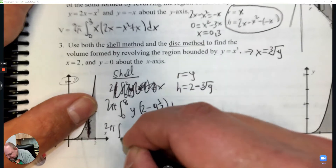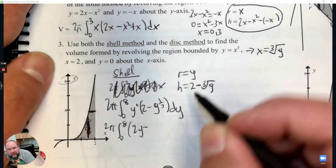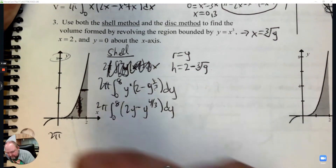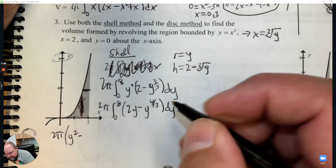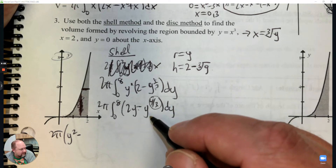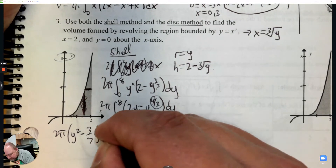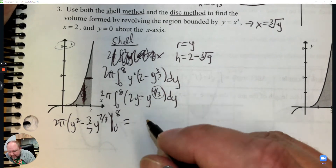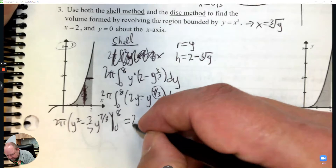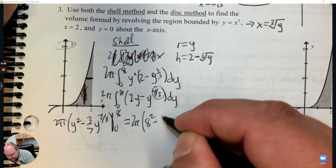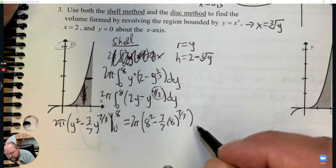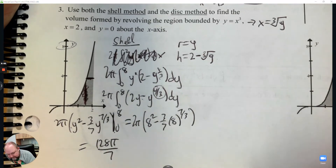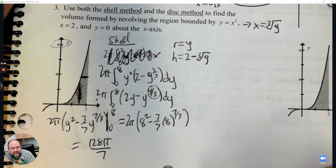Before going further, we distribute. The exponent on y is 1, so when you multiply you add the exponents. Then we integrate: 2y becomes y squared over 2. For the other term, 1 plus 1/3 gives 4/3, so we get 3/7 times y to the 7/3 power. Integrating from 0 to 8 - plug in 8 - and when you plug in 0 the answer is 0. Simplifying, you get 128π/7.